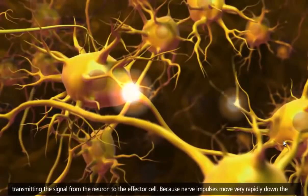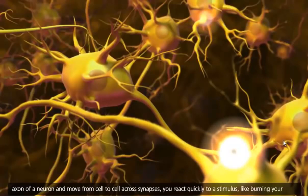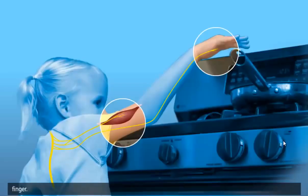Because nerve impulses move very rapidly down the axon of a neuron and move from cell to cell across synapses, you react quickly to a stimulus, like burning your finger.